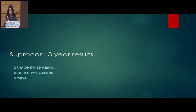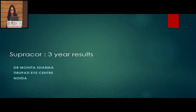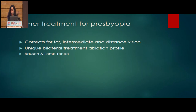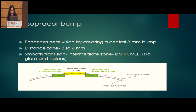Good afternoon. I'll be talking about another modality of presbyLASIK — SupraCore — which we've been working with for the last three years. This is also an excimer treatment which corrects for near, intermediate, and distance vision. It can be either a unilateral or bilateral treatment depending on patient acceptance, decided based on pre-op assessment using the Bausch & Lomb Technolas machine. The basic principle is a central 3 mm bump responsible for near vision, a distance zone from 3 to 6 mm, and an intermediate zone in between.